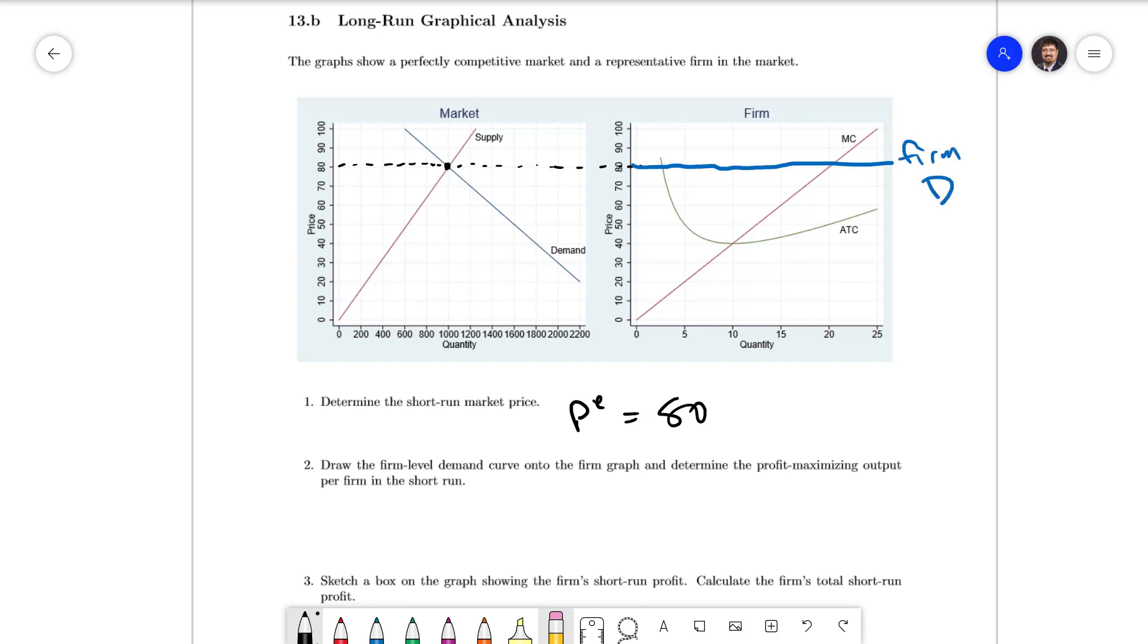The firm's marginal cost curve is also its supply curve, so where that crosses the firm level demand curve we're going to have our profit maximizing quantity of 20. I'm going to use a lowercase e to indicate our equilibrium quantity for the firm.